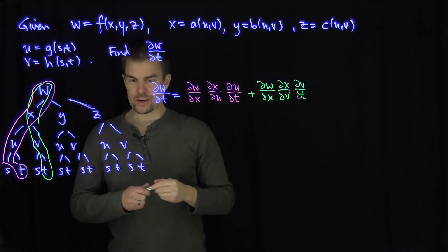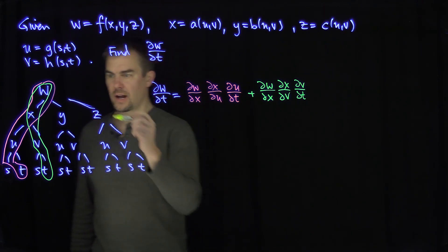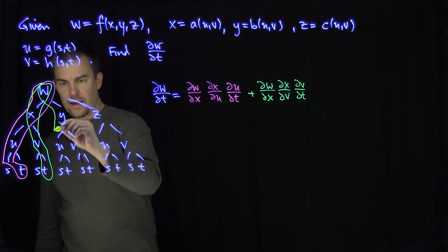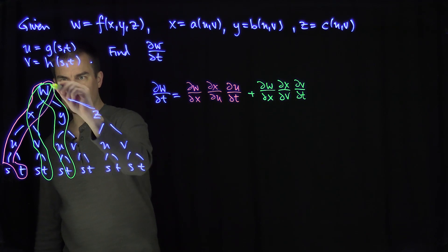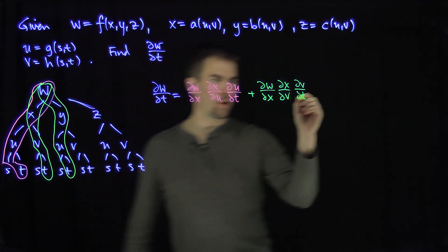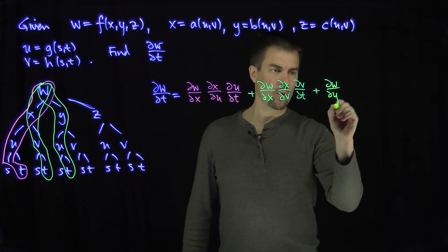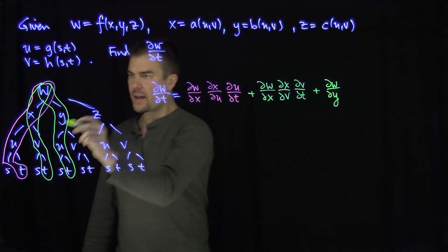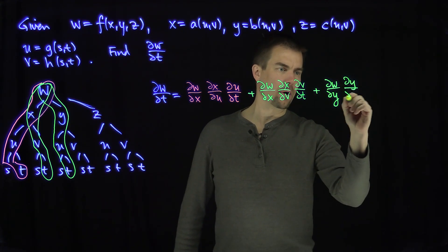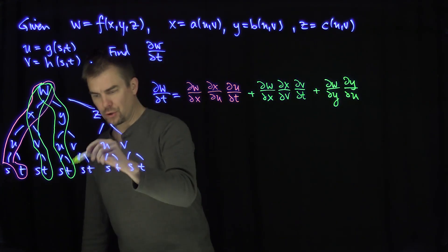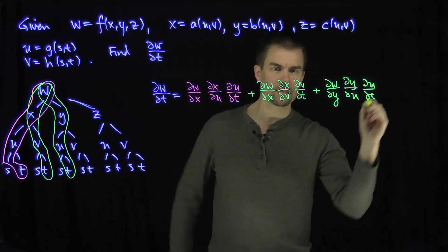A couple more trajectories to go. We can go from w to y, from y to u, and from u to t. That gives us (∂w/∂y)(∂y/∂u)(∂u/∂t). Then another trajectory: we can go from w to y, to v, to t, giving us plus (∂w/∂y)(∂y/∂v)(∂v/∂t).